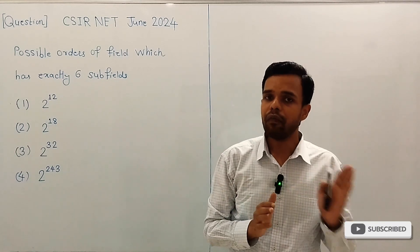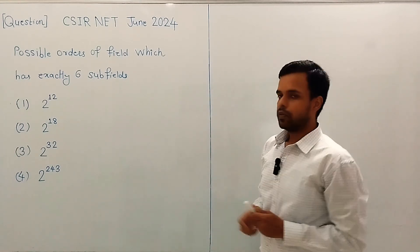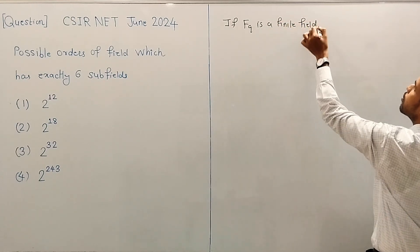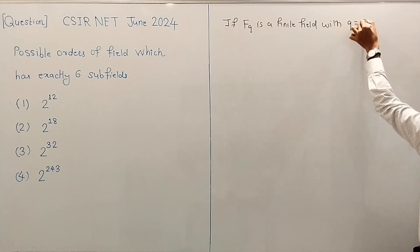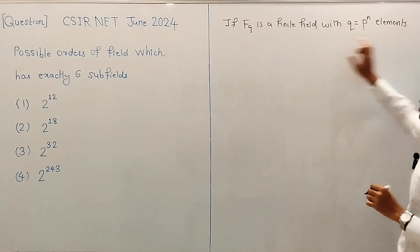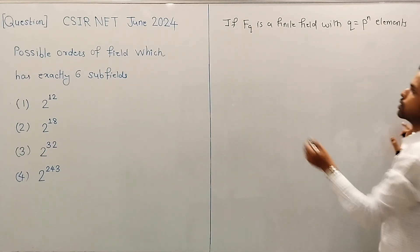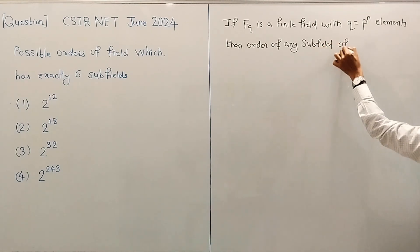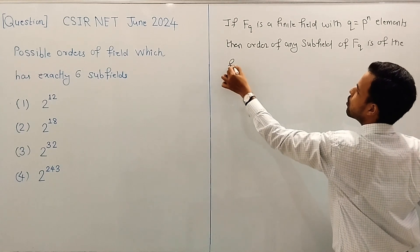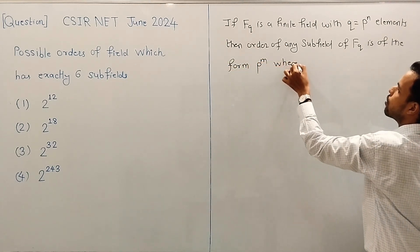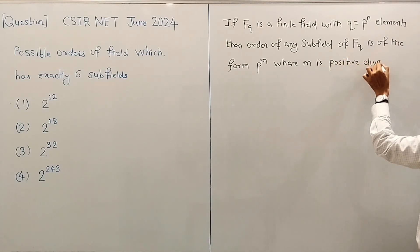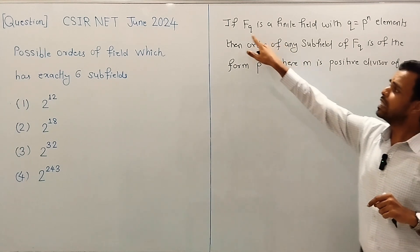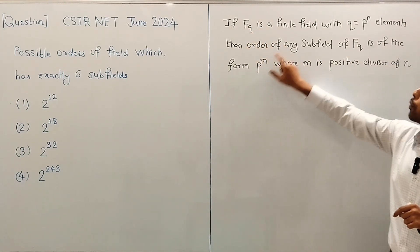We know that the order of any finite field is some prime power. We will use the result: if F_q is a finite field with q = p^n elements, then the order of any subfield of F_q is of the form p^m, where m is a positive divisor of n.